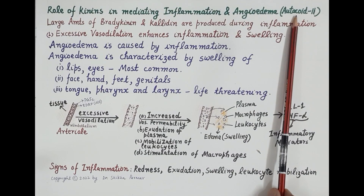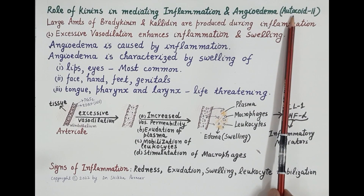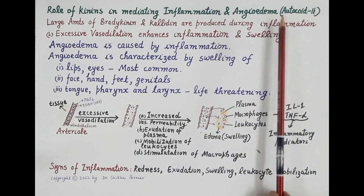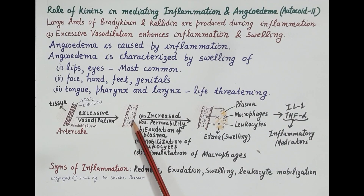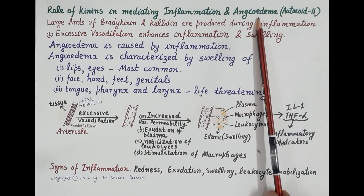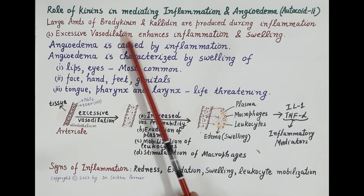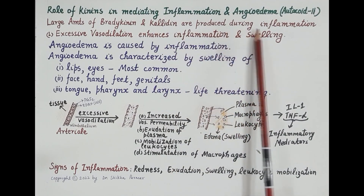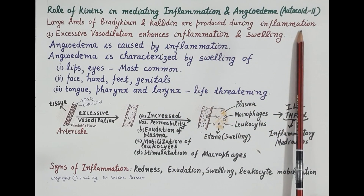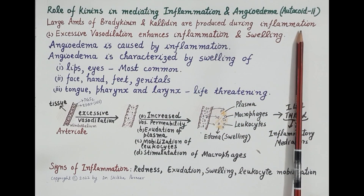By now we know that bradykinin and kallidin are potent vasodilators — they dilate the blood vessels. These kinins are also very potent inflammatory mediators, and large amounts of bradykinin and kallidin are produced during inflammation.